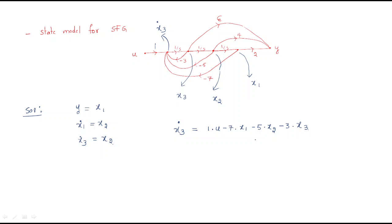We also write the output equation. The output y: x1 reaches y by a gain of 2, so 2 times x1; x2 reaches y by a gain of 4, so 4 times x2; x3 reaches y by a gain of 6, so 6 times x3. Therefore y equals 2x1 plus 4x2 plus 6x3.